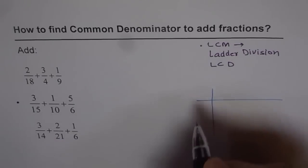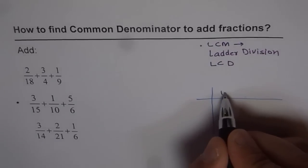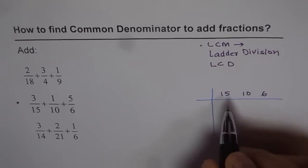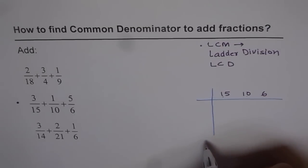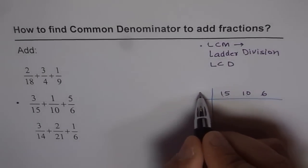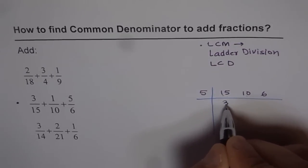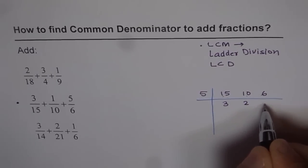So here we have numbers in the denominator as 15, 10, and 6. As you can see, 5 is a common factor in the first two. So we can use 5 and simplify them. 5 goes 3 times in 15, 2 times in 10, and 5 is not a factor of 6. So let's write 6 as such.